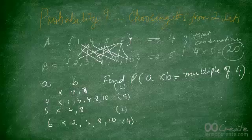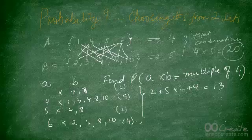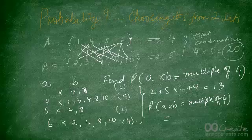The total number of combinations that give a multiple of 4 is 2 + 5 + 2 + 4, which equals 13. Therefore the probability that A times B is a multiple of 4 is 13 out of 20.